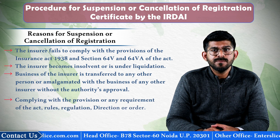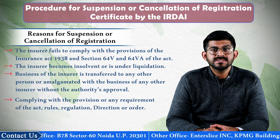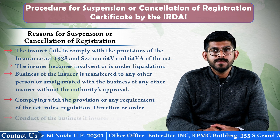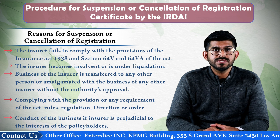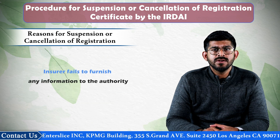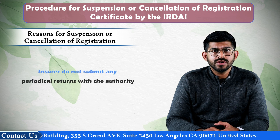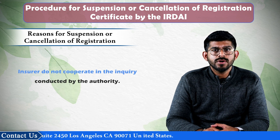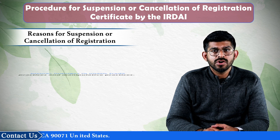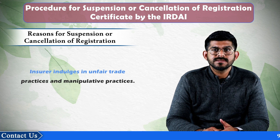Other reasons include: default in complying with any provision or requirement of the Act, rules, regulations, directions, or orders; conduct of the business of the insurer that is prejudicial to the interests of policyholders; failure to furnish any information to the authority; failure to submit any periodical returns with the authority; failure to cooperate in any inquiry conducted by the authority; or if the insurer indulges in unfair trade practices and manipulative practices.